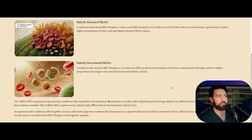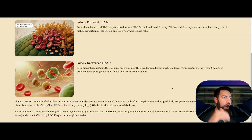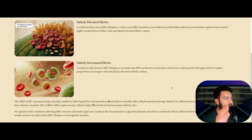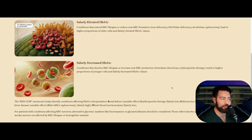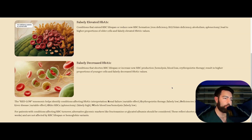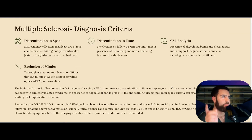A1C interpretation — conditions that extend RBC lifespan or reduce new RBC formation (iron deficiency anemia, B12 deficiency, folate deficiency, alcoholism, splenectomy) lead to a higher proportion of older cells, resulting in falsely elevated A1C. Conditions that shorten RBC lifespan or increase new RBC production (hemolysis, blood loss, EPO use) lead to falsely decreased A1C. For patients with conditions affecting RBC turnover, use alternative glycemic markers such as fructosamine or glycated albumin, reflecting 2 to 3 weeks of glycemic control, though these can be affected by liver function.